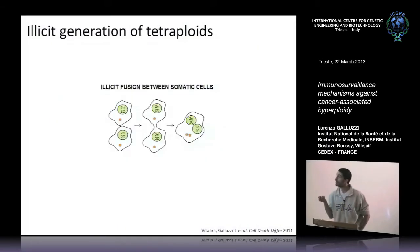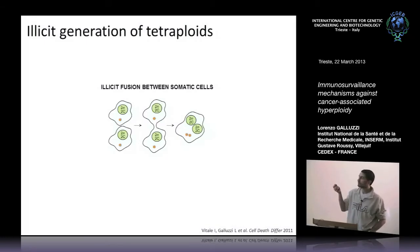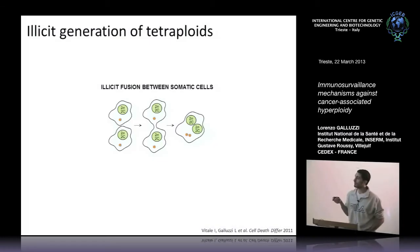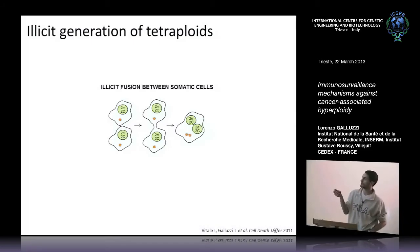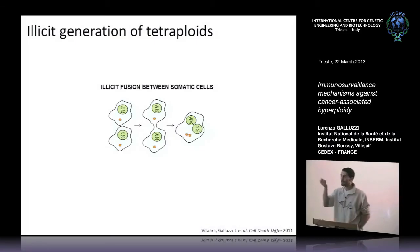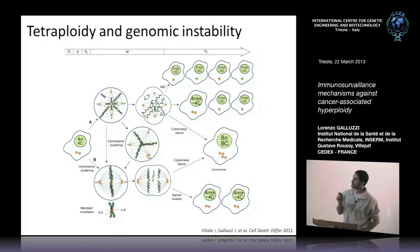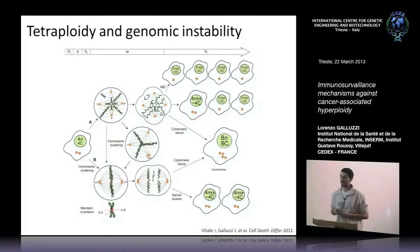An additional means for cells to become tetraploid or higher-order hyperploid is upon fusion. This is the case when there are viruses around — a lot of viral proteins are fusogenic, so you can actually use them experimentally to generate tetraploid cells. In this case normally nuclei stay separated, but in some cases they also fuse.